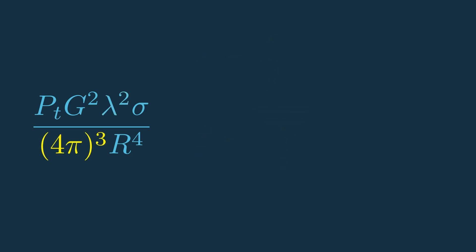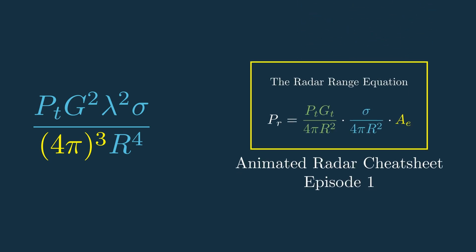Next is this 4π cubed constant, which partially comes from the equation for the surface area of a sphere. But like the speed of light, we can't manipulate this to get a better SNR, so I won't really cover it here. But if you're curious about where it comes from, check out the last video that goes into this in much more depth.